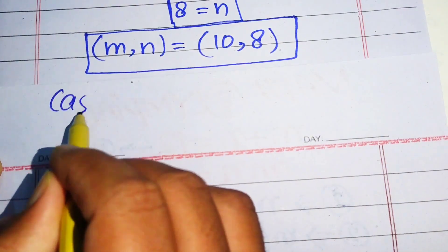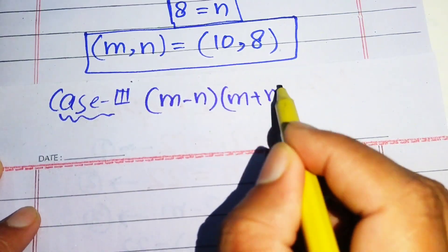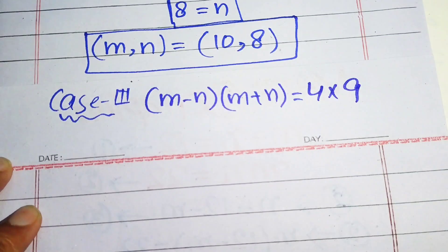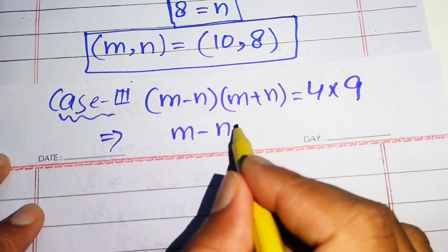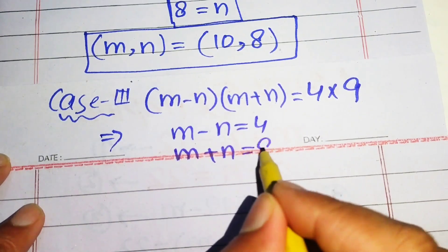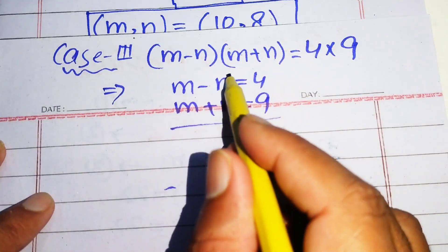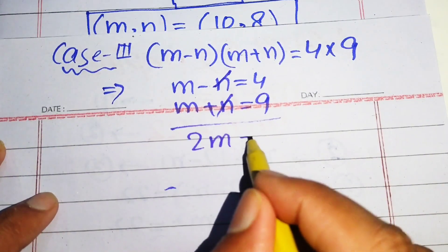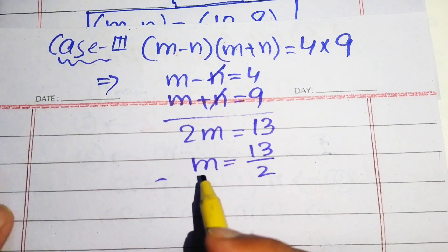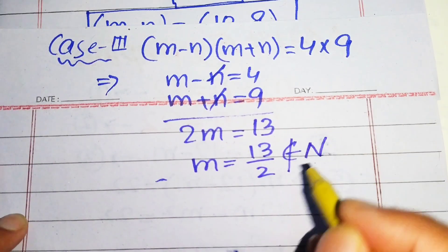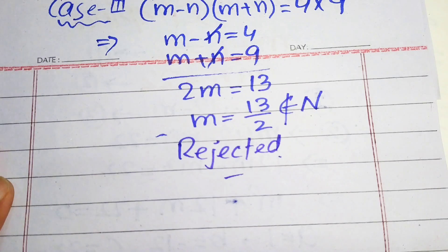Case 3: We compare (m minus n)(m plus n) with 4×9, giving m minus n = 4 and m plus n = 9. Adding these equations, the n terms cancel and we get 2m = 13, so m = 13/2. Since 13/2 is not a natural number, we reject this case.